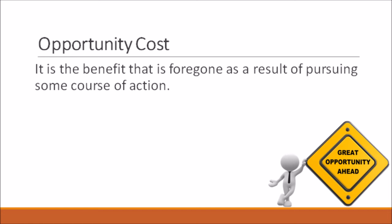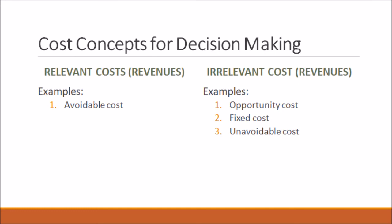Next is the cost concept for decision making. Here are examples of relevant costs and irrelevant costs. For relevant costs: avoidable costs, opportunity costs — the benefit forgone. For irrelevant costs: fixed costs and unavoidable costs.